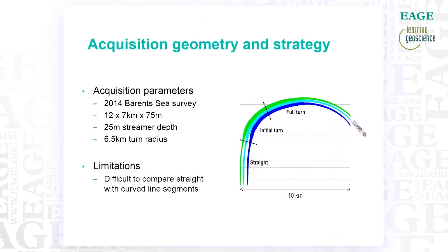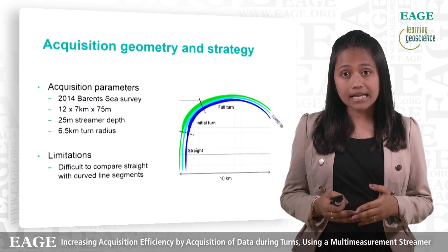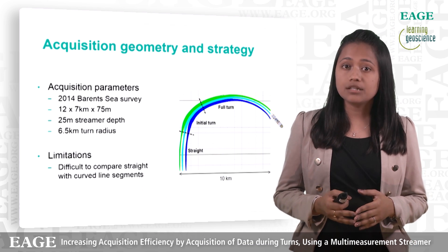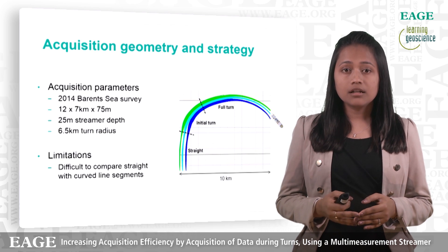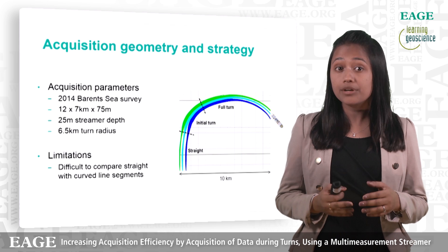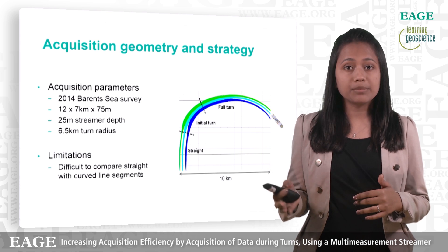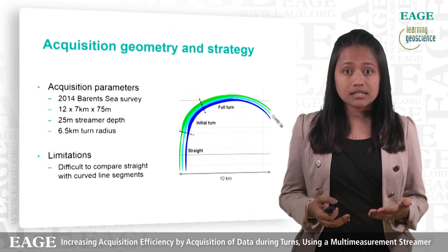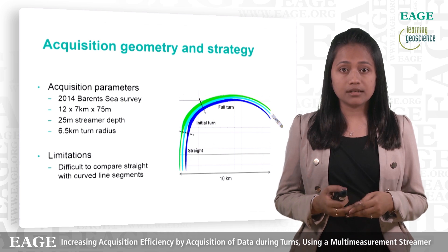In 2014, we acquired a test line in the Barents Sea. 12 streamers, each of 7 km long, were towed at a separation of 75 m and the streamers were towed flat at a depth of 25 m. The turn radius was 6.5 km. The plot on the right-hand side of the screen shows the geometry for the line for 3 representative cables only. Throughout the presentation, I will refer to the segments as straight, initial turn and full turn.